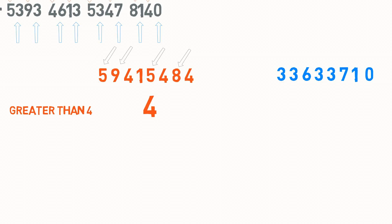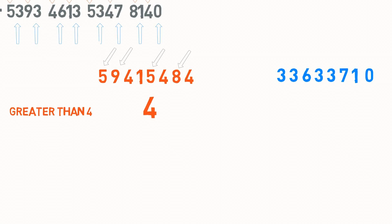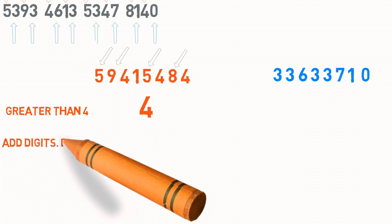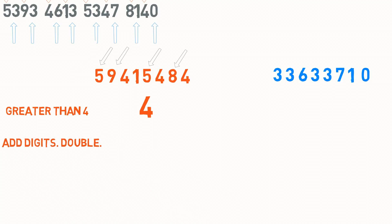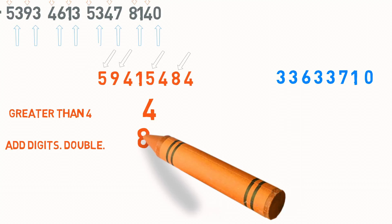Next, I will add the digits of this top number. So we have 5 plus 9 plus 4 plus 1 and so on. That gives us 40. I will then double this result, and that gives me 80. Let me write this down.